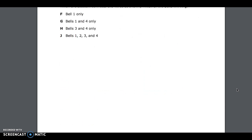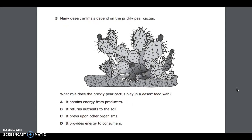Number 5. Many desert animals depend on the prickly pear cactus. What role does the prickly pear cactus play in a desert food web? A, it obtains energy from producers; B, it returns nutrients to the soil; C, it preys upon other organisms; D, it provides energy to consumers.